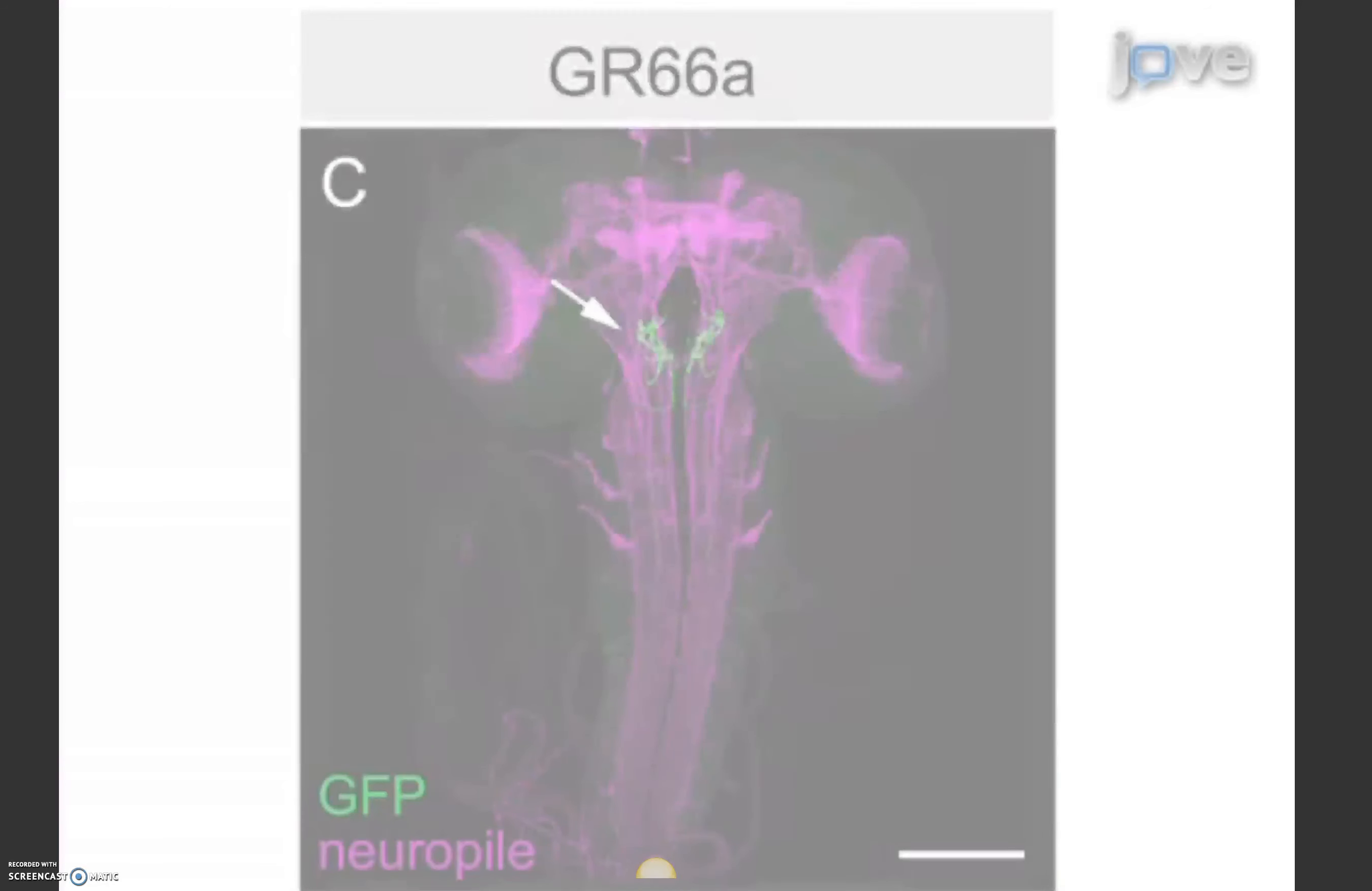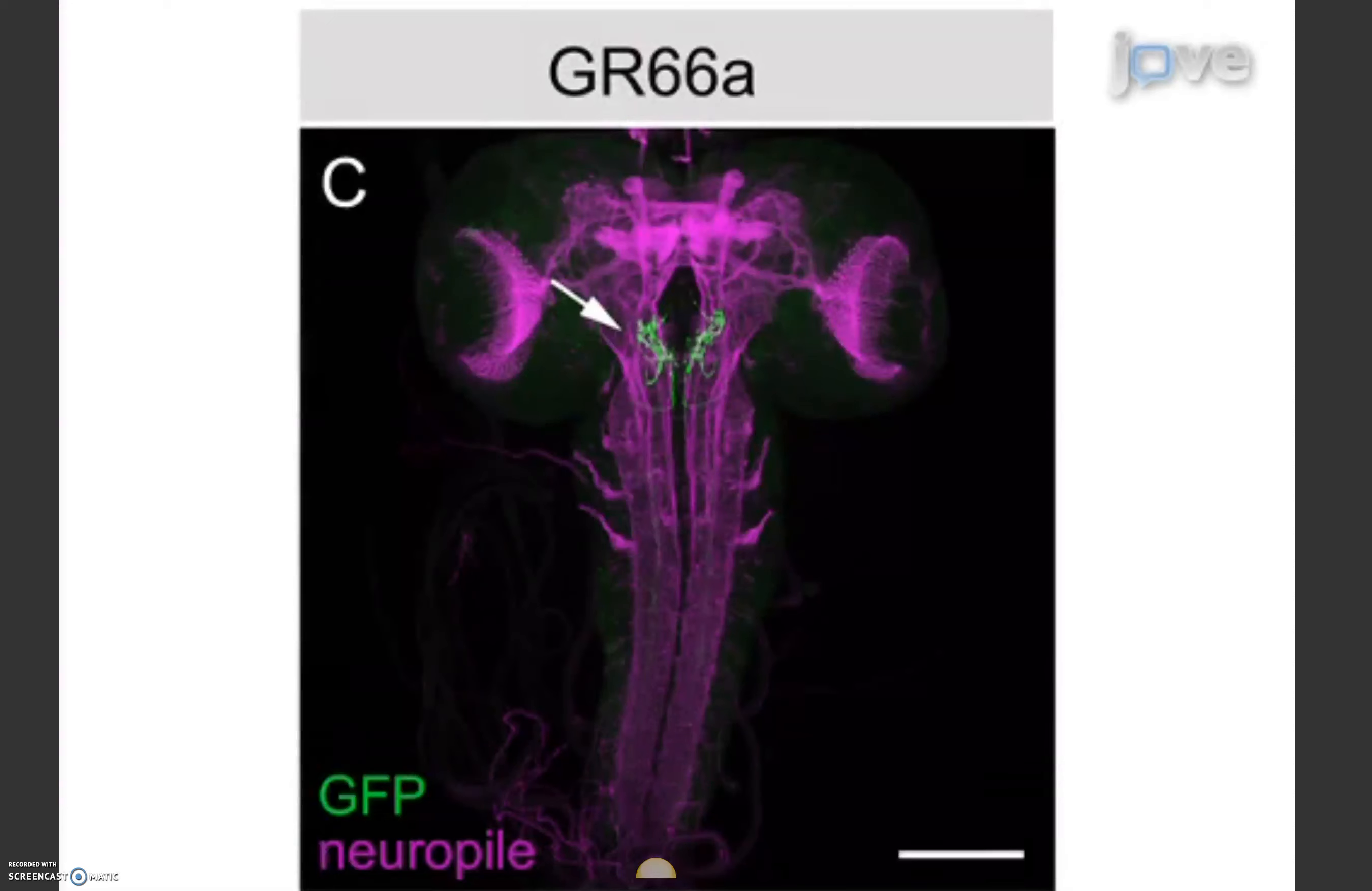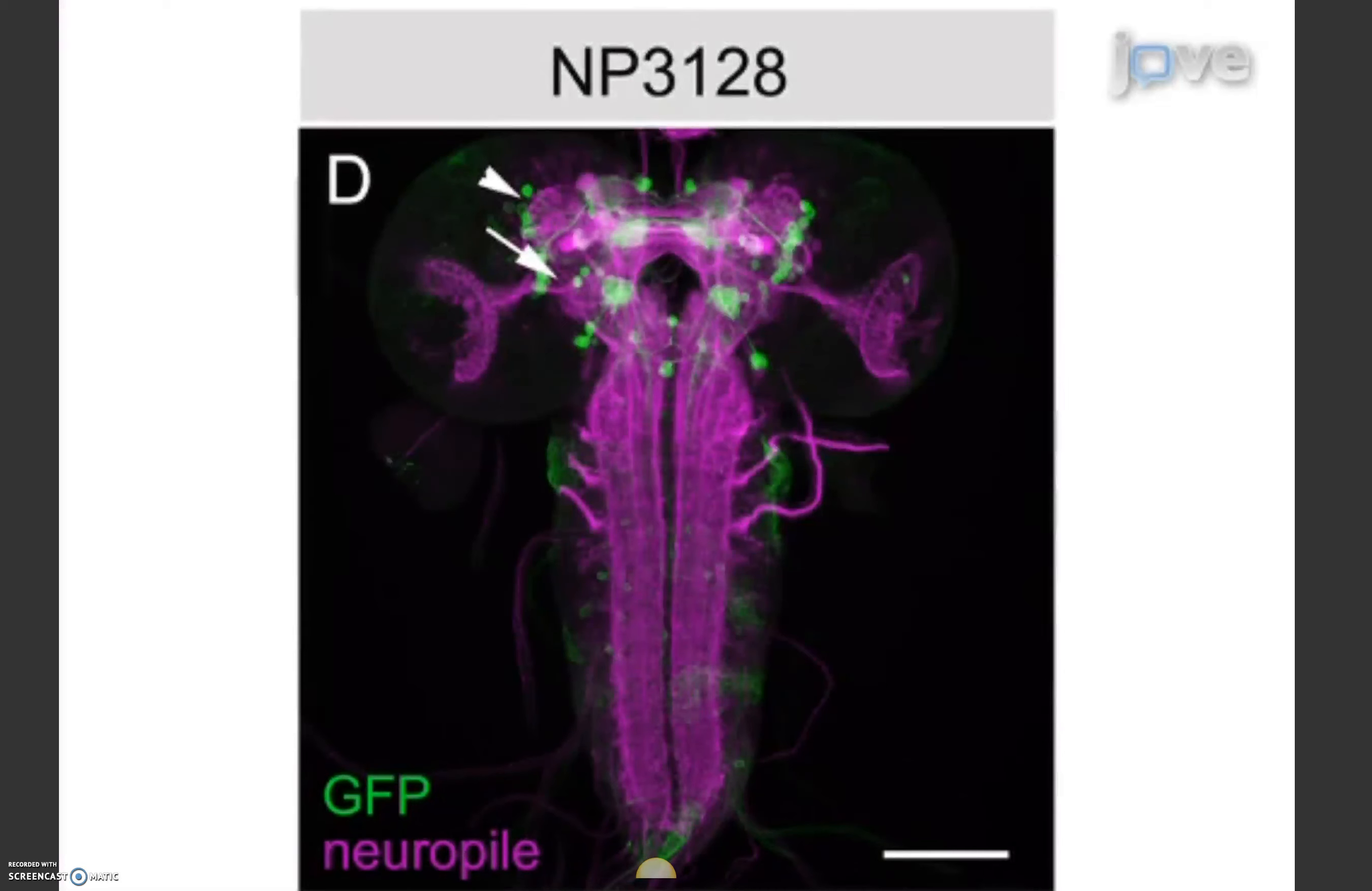For example, by genetically manipulating specific sets of neurons defined by GAL4 expression patterns, the functional roles of those neurons in appetitive learning can be assessed.